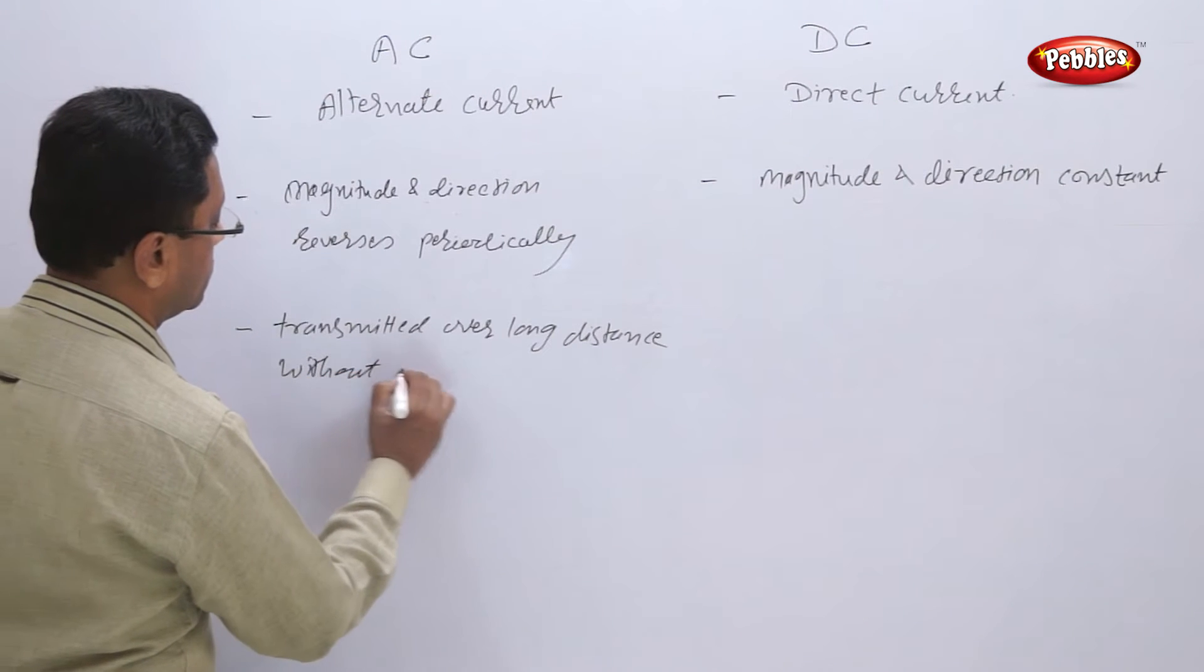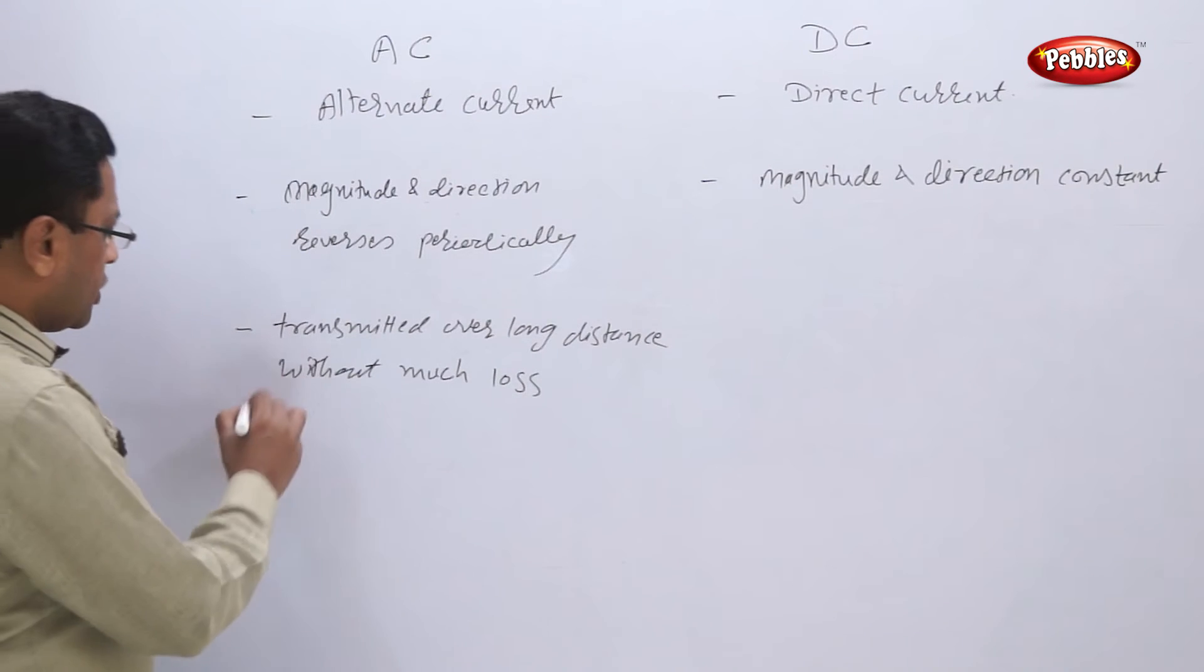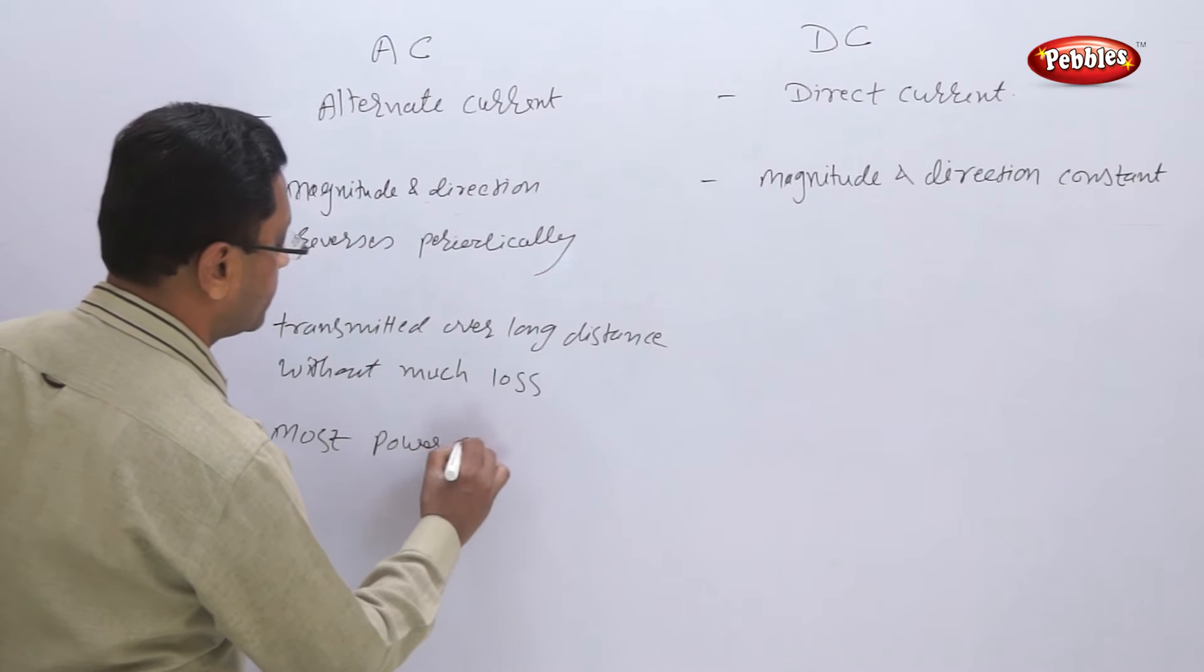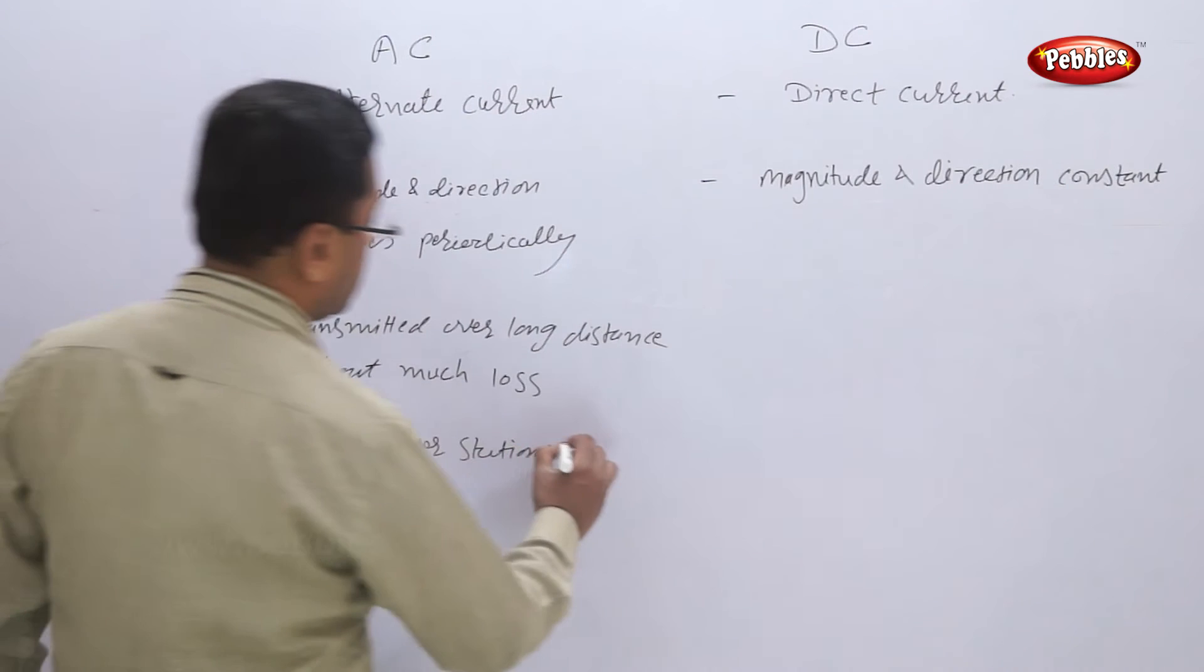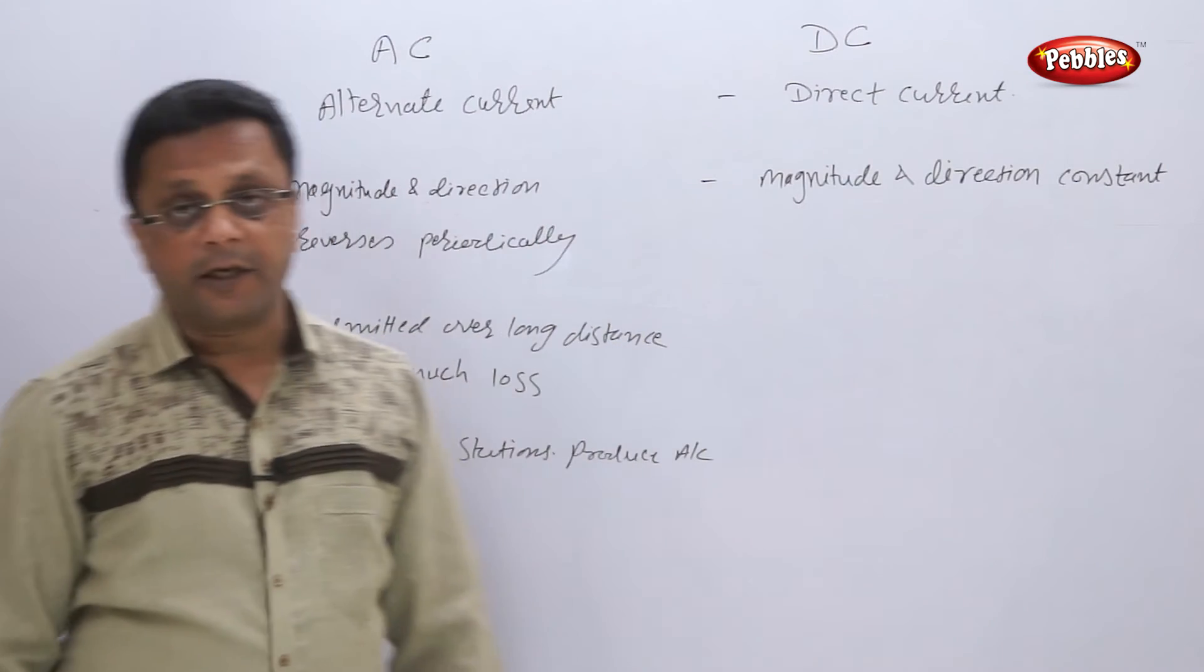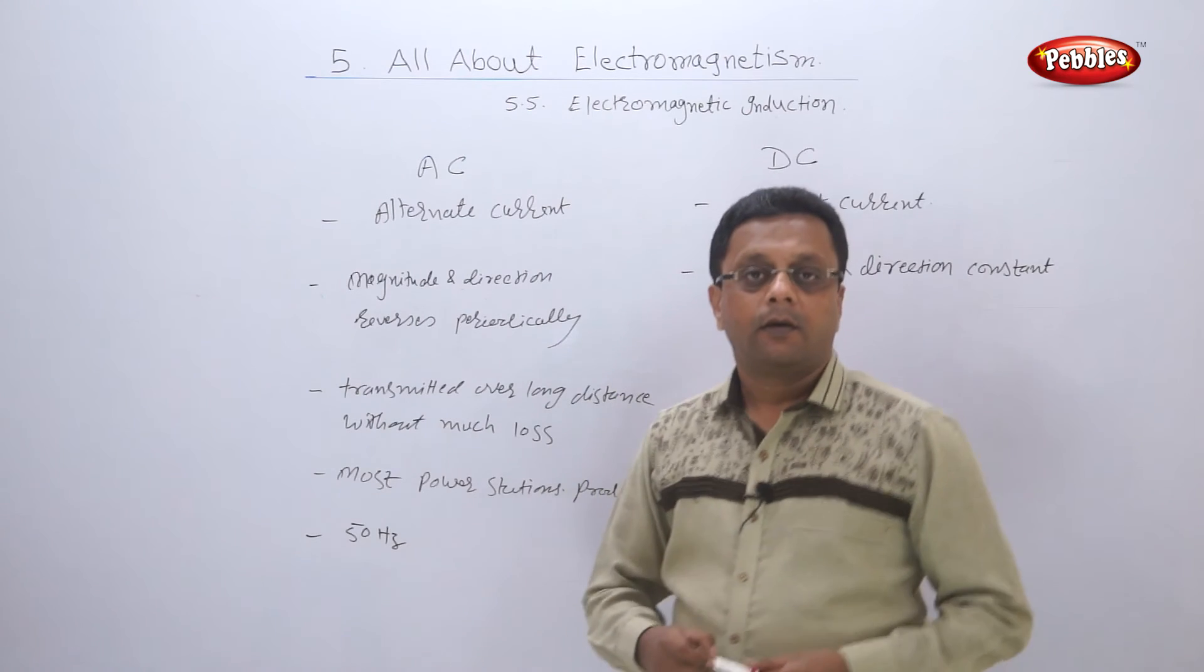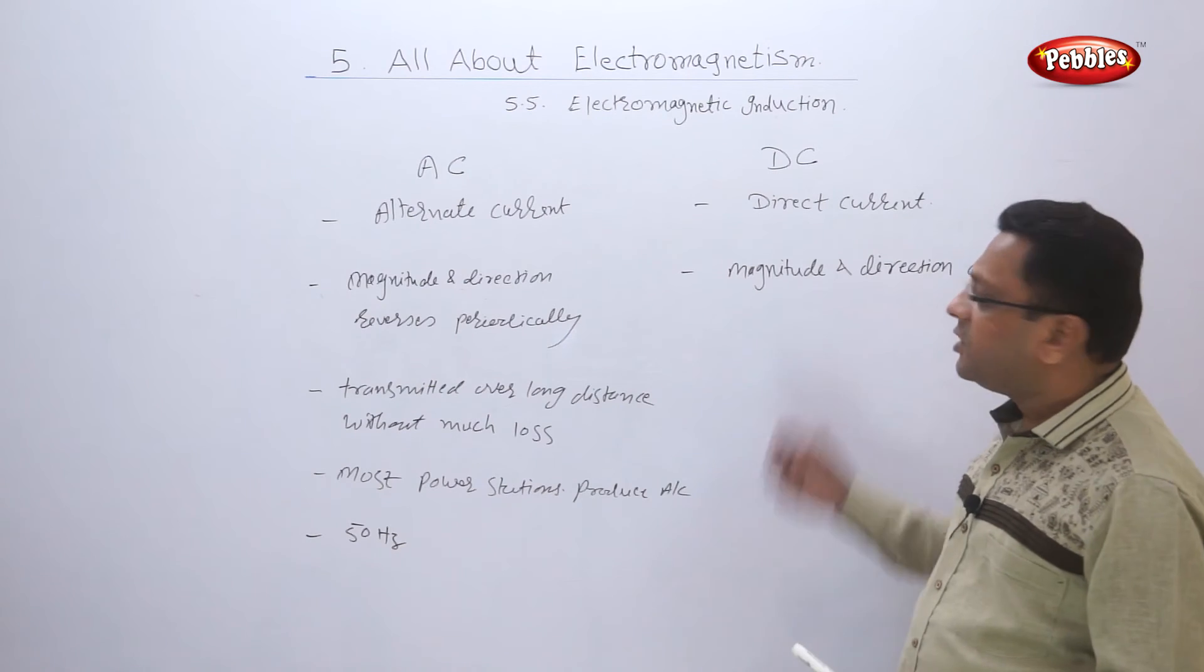Generally, most power stations in India produce AC, alternating current. The frequency is 50 Hertz for AC current in India.